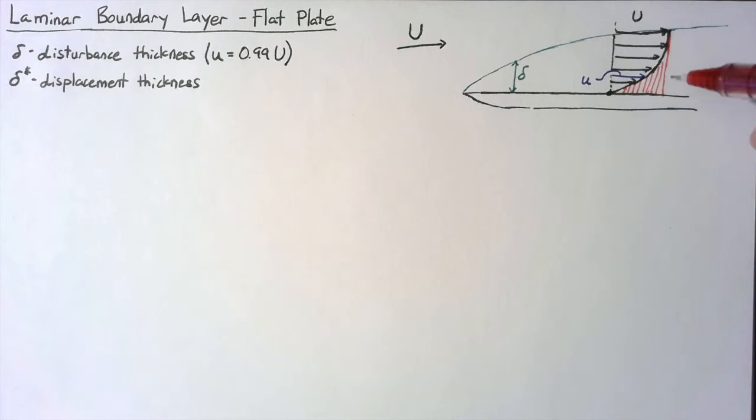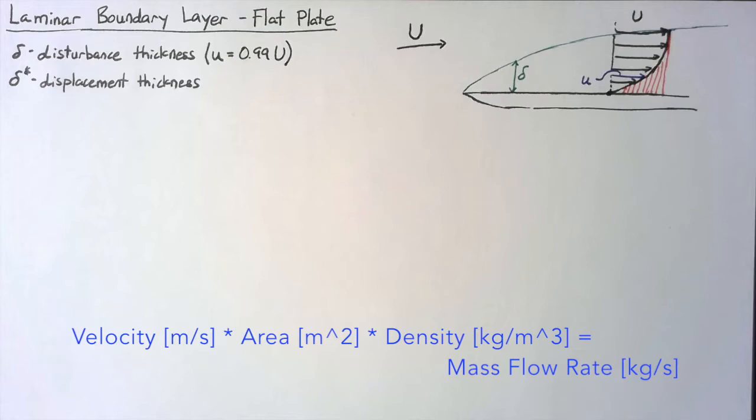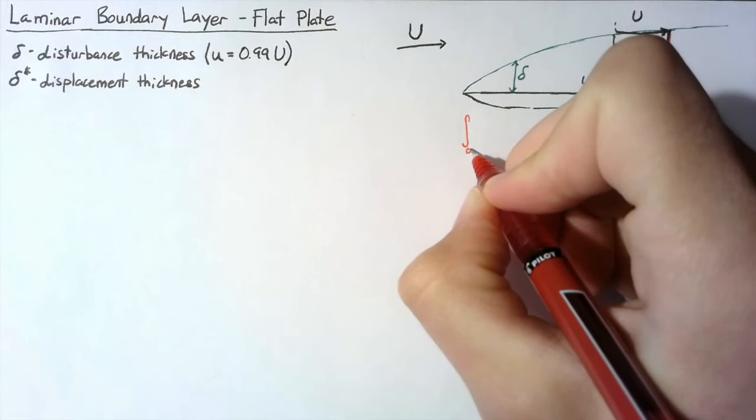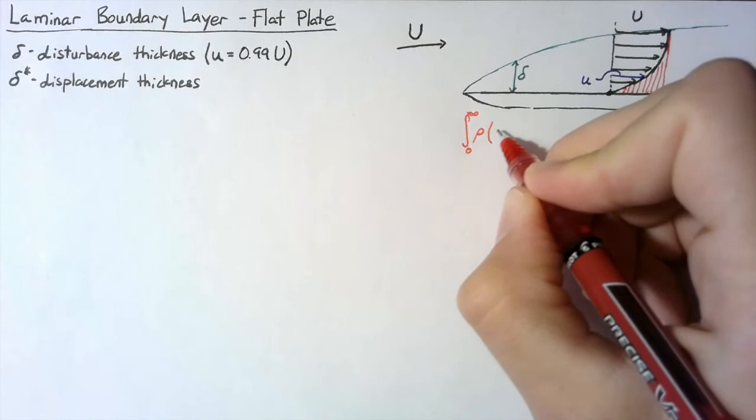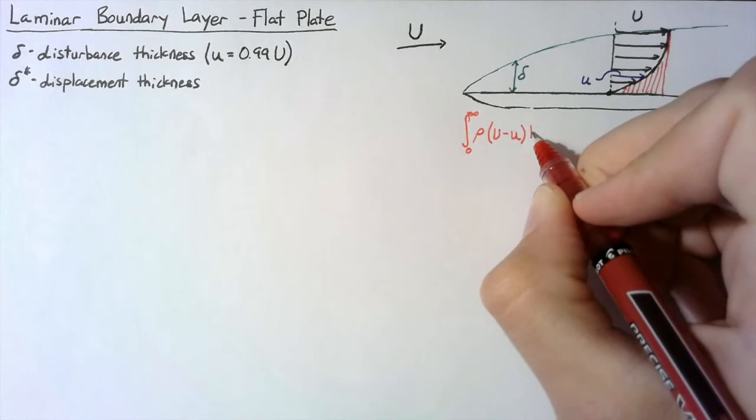Velocity multiplied by area is a volumetric flow rate. If we multiply that by rho, then we end up with a mass flow rate. So the area in this curve is going to be the integral from zero to infinity of rho multiplied by the velocity deficit — the far field velocity minus the local velocity — and then that's going to be multiplied by dA, which is just the distance into the page, b, multiplied by dy.